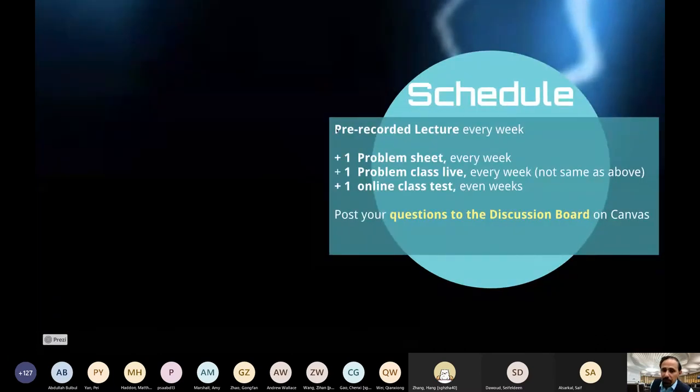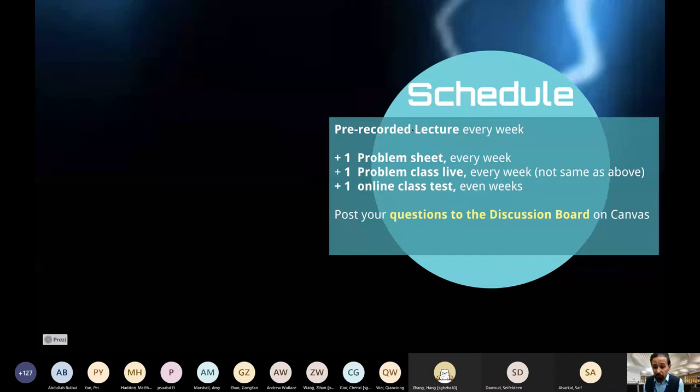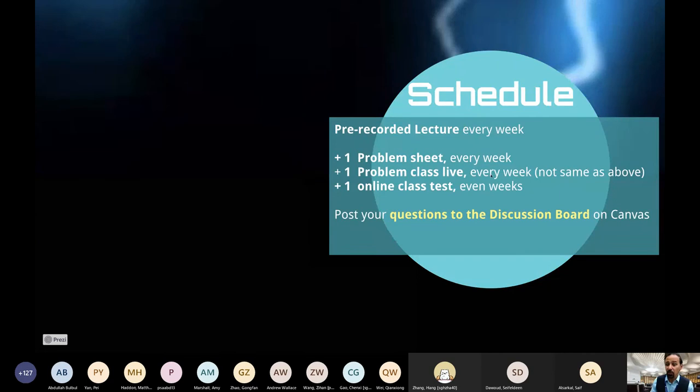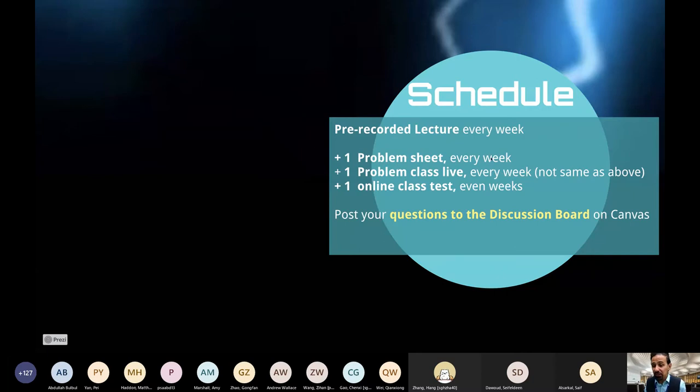How are we going to do this? I'm going to pre-record a lecture every week. That'll be roughly 40, 45 minute lecture every week, and that'll be available to you on the Monday or the Tuesday on Canvas. There'll also be a live problem class every other week. There's a little mistake there. A live problem class every other week and a problem sheet every week. On even weeks, there will be a class test. Every other Monday, 11 o'clock, there will be a class test. I will give you details about that as we get closer to the time.